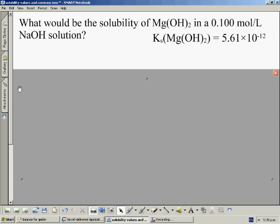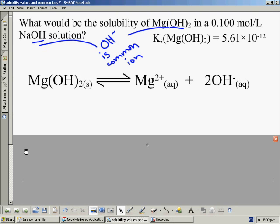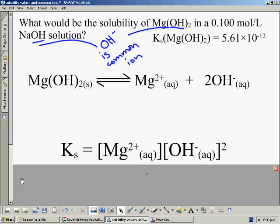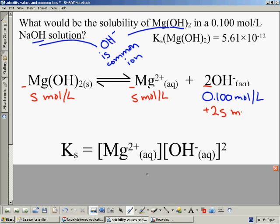This is a slightly more complicated example because it's a 1 to 2 ion ratio salt, but we have a hydroxide solution and we're dissolving a hydroxide salt, so hydroxide ions are a common ion. And this is the equation for the salt dissolving, and this is the Ks expression that follows. The hydroxide ion concentration is already 0.1 mol per liter from the sodium hydroxide, and on top of this, we will be able to dissolve S moles of our salt into one liter of this solution. As a consequence of that, the ion concentrations are going to be affected like this.